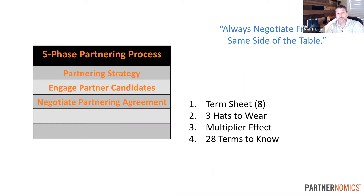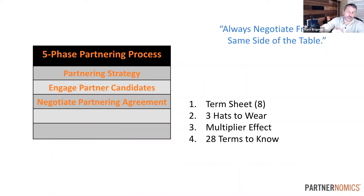Another thing: if you have some quote-unquote legal terms that are non-standard, put those in the term sheet too. The whole idea is: if we're going to argue, let's argue early. Let's get everything on the table so we're having this conversation now rather than months down the road getting legal involved, taking up all these other resources, when we knew months ago that we could never agree to that. Put all business terms in there, but also any non-standard legal terms — let's put those in the term sheet so they're discussed.